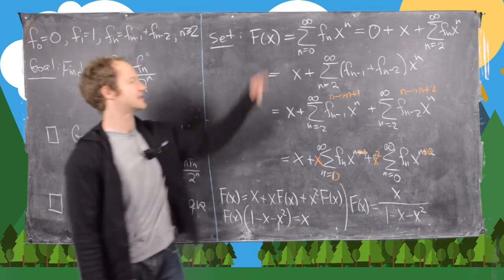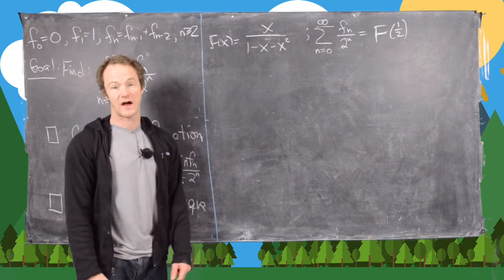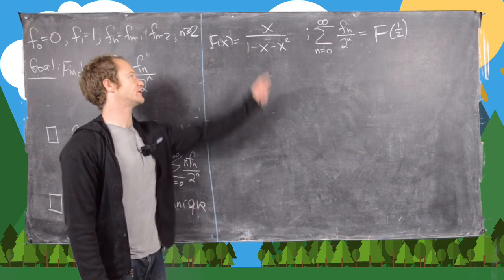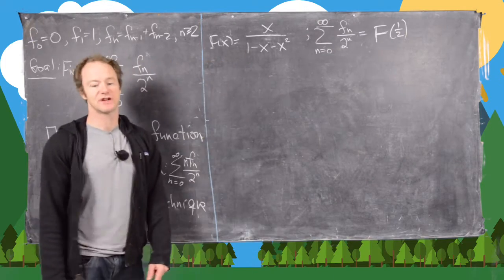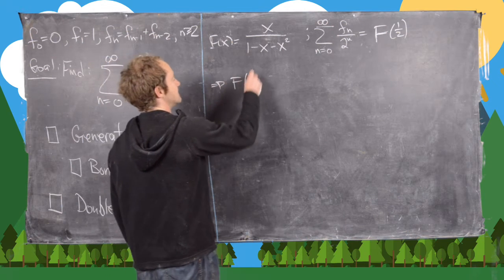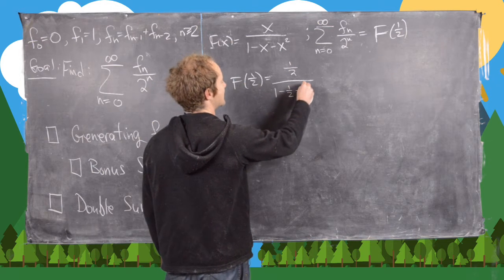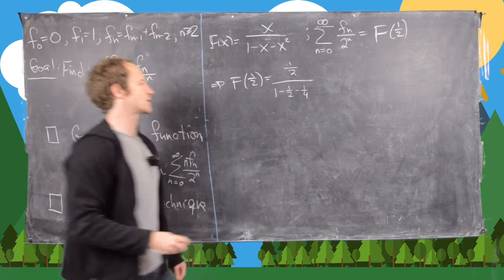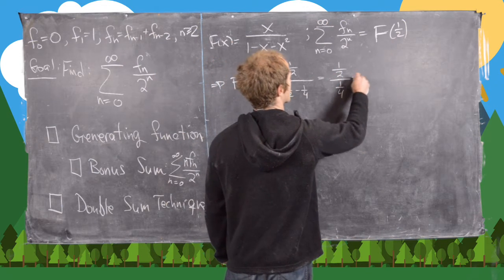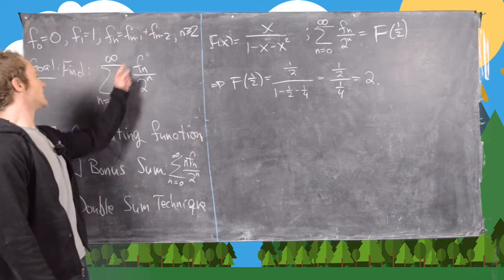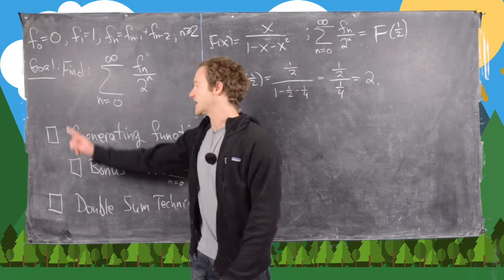Recalling that F(x) = x/(1-x-x²), our goal sum is just F(1/2). Evaluating: (1/2) / (1 - 1/2 - 1/4) = (1/2) / (1/4) = 2. So the sum of the Fibonacci numbers over 2^n equals 2.